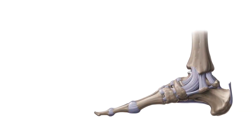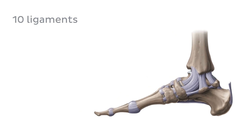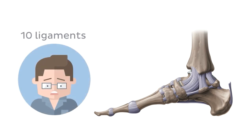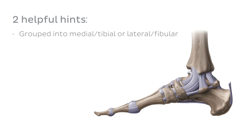Let's have a look at the structures that are helping to stabilize the ankle joint — the ligaments. There are 10 ligaments that we are going to look at today: seven more external ligaments that stabilize the ankle joint proper and the subtalar joint, and three ligaments that are more internal and specifically related to the subtalar joint. They are grouped to either the medial (tibial) side, the lateral (fibular) side, or the talocalcaneal joint, and they are all named for the bones they are attached to.